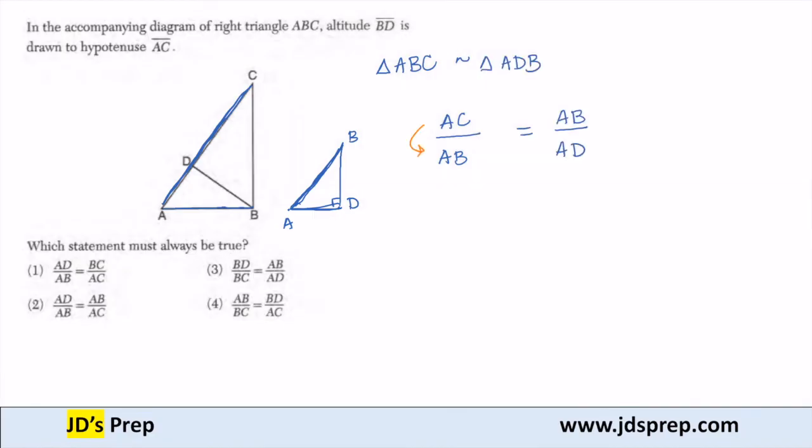If I flip this side over, I'd get AB over AC. And if I do the same thing to the other side, I'd get AD over AB. And so since I'm doing the reciprocal on both sides, this proportion must also be equal.